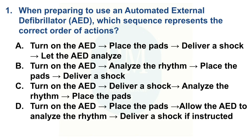The first question: When preparing to use an automated external defibrillator (AED), which sequence represents the correct order of actions? Option A: Turn on the AED, place the pads, deliver a shock, let the AED analyze. Option B: Turn on the AED, analyze the rhythm, place the pads, deliver a shock. Option C: Turn on the AED, deliver a shock, analyze the rhythm, place the pads. Option D: Turn on the AED, place the pads, allow the AED to analyze the rhythm, deliver a shock if instructed. The correct option is Option D: Turn on the AED, place the pads, allow the AED to analyze the rhythm, deliver a shock if instructed.